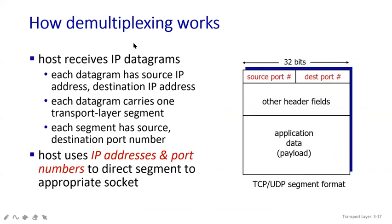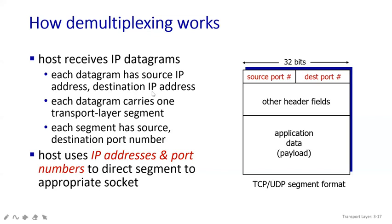Now let's see how demultiplexing works. In the transport layer, we use the term datagrams. The host always receives IP datagrams. Each datagram has a source IP address and a destination IP address. Each datagram carries one transport layer segment, and each segment has a source port number, destination port number, and source IP address.